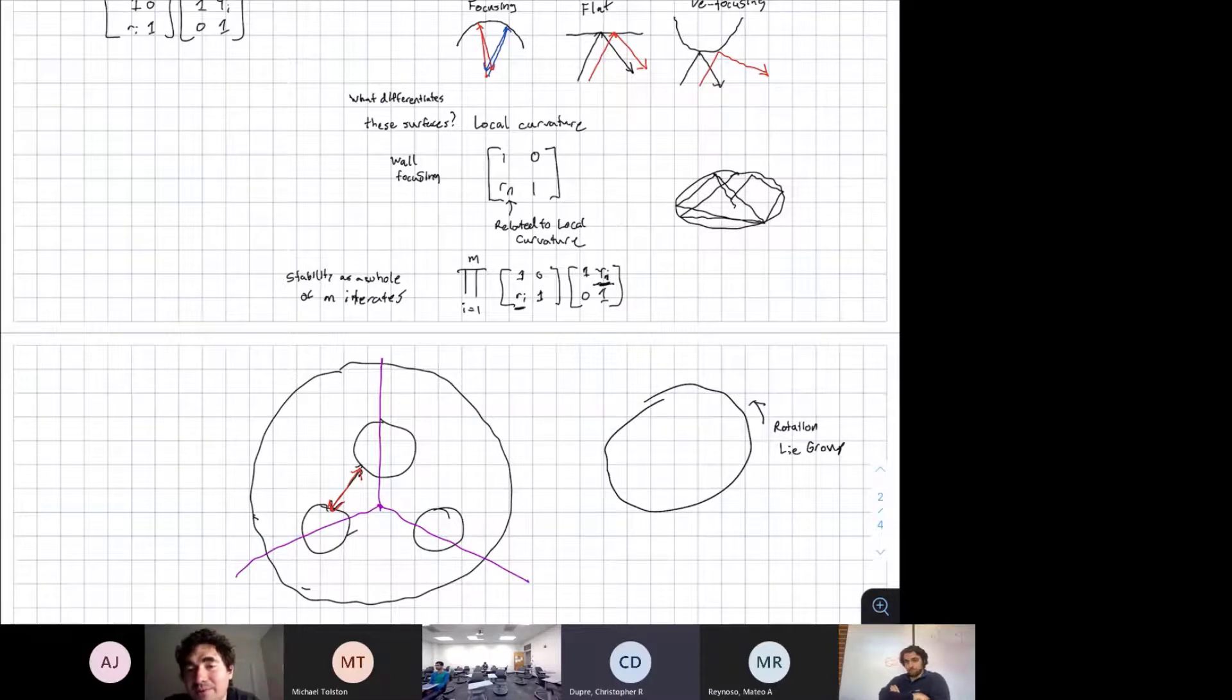That's not trivial to prove. In the case of Bunimovich stadium, proving that it's ergodic is not easy. That's why Bunimovich is so famous. In simpler cases where you can show the stability matrix always gives unstable eigenvalues, that results in always positive Lyapunov exponents. Together with the bounded motion you're going to visit the whole phase space and have chaos.